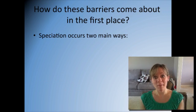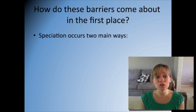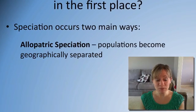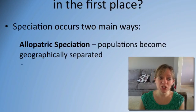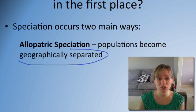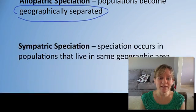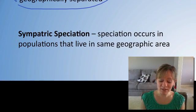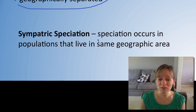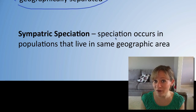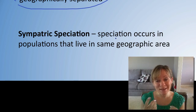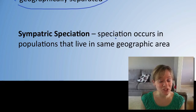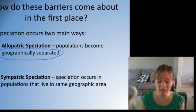How do these barriers come about in the first place? Two main ways. Allopatric speciation is when two populations become geographically separated or isolated from one another. Sympatric speciation is the opposite — speciation occurring within the same geographic area, where members are living and cohabitating in the same environment yet becoming different species.